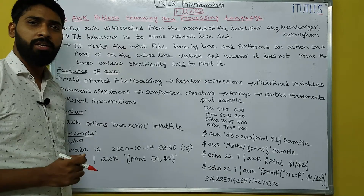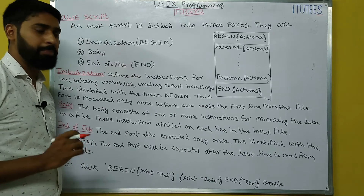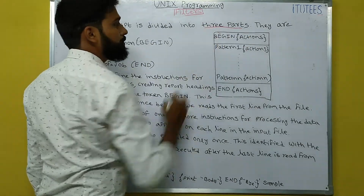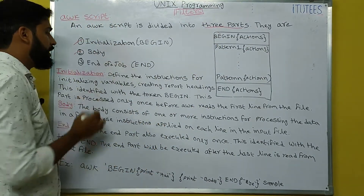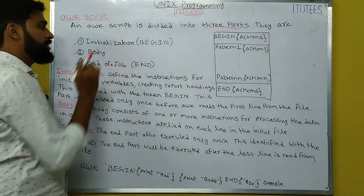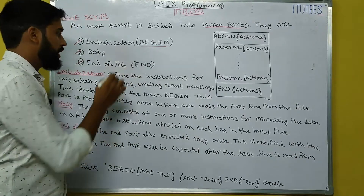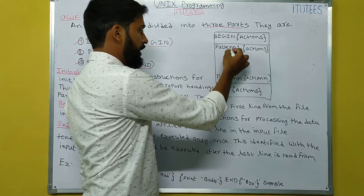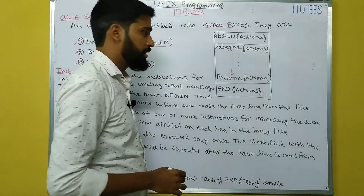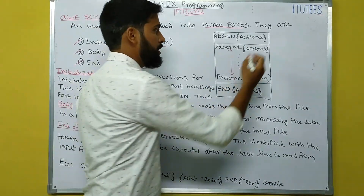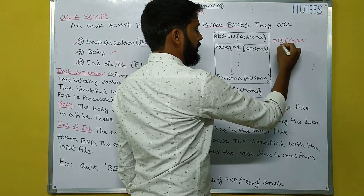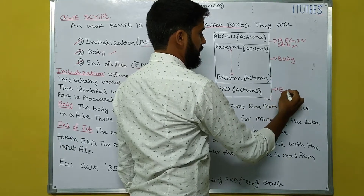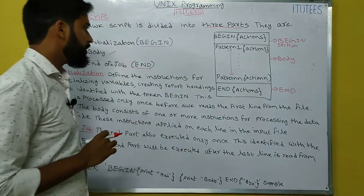Welcome to our channel. Now we'll see how to write an AWK script. An AWK script is divided into three parts: initialization, body, and end of job. Initialization is the BEGIN section, the body is the main processing section, and end of job is the END section.